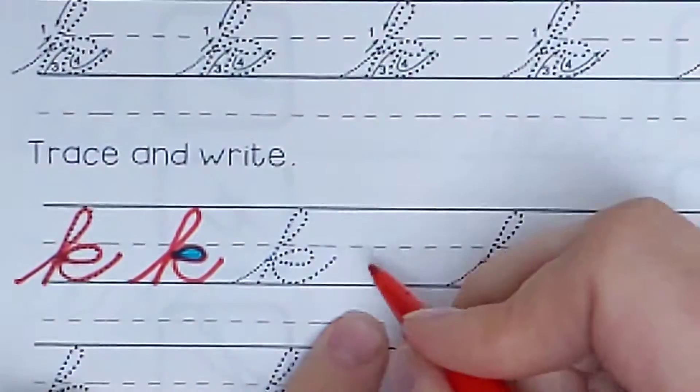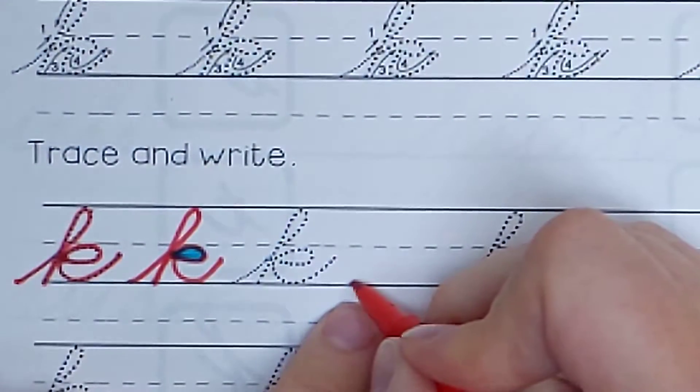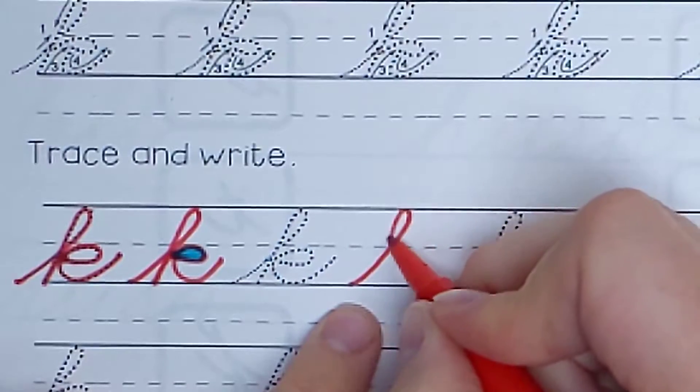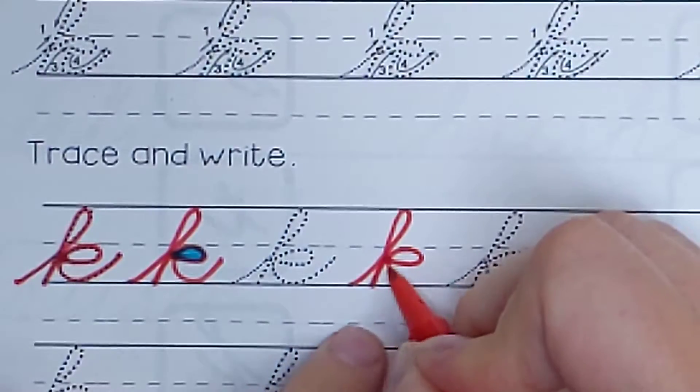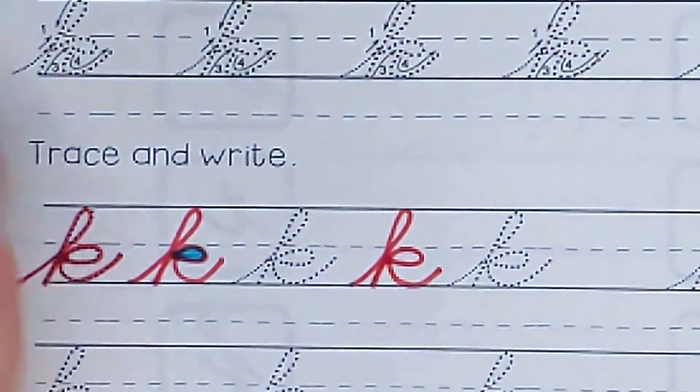So one more time. Watch me do another one and then you'll do it with me. I'm going to do it by myself though. Ready? So you're going to start at the bottom. You're going to loop around. Go straight down. Basketball bounce up. Do that little raindrop so it touches right there. And then go back out. Okay.